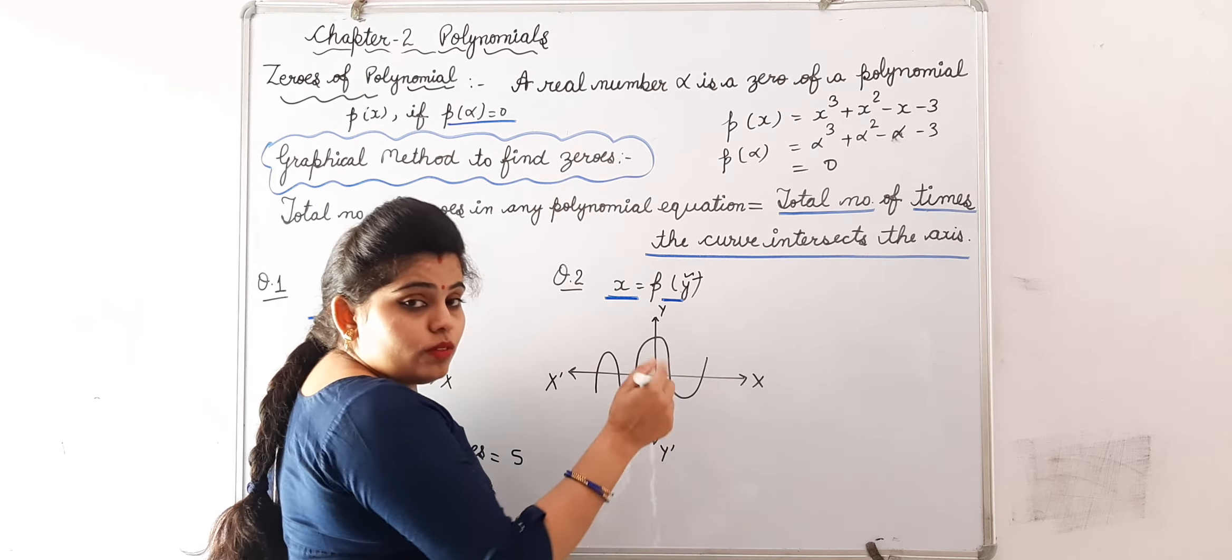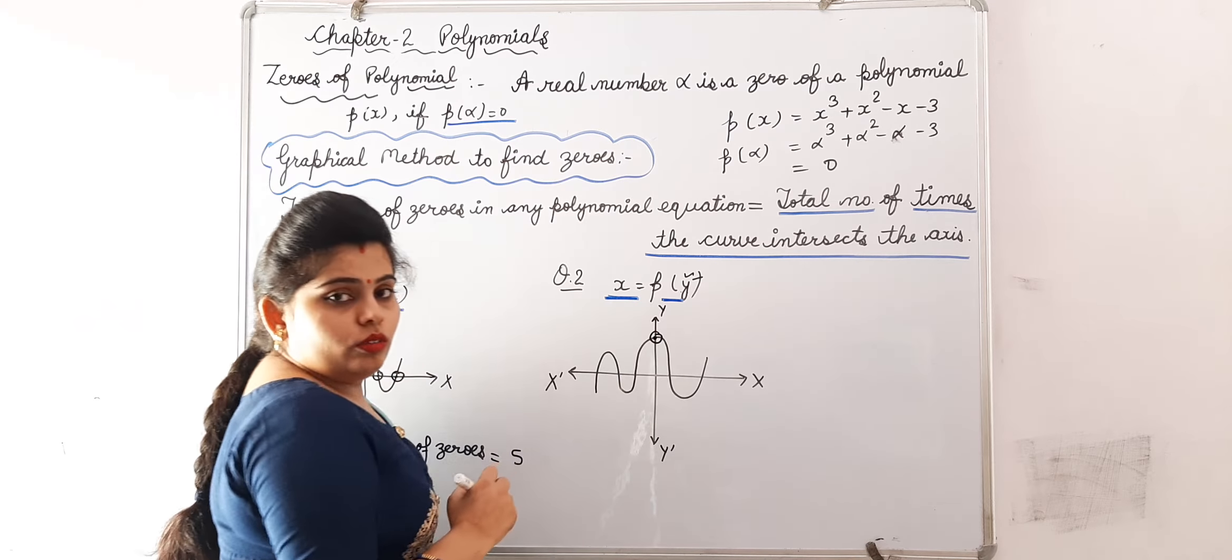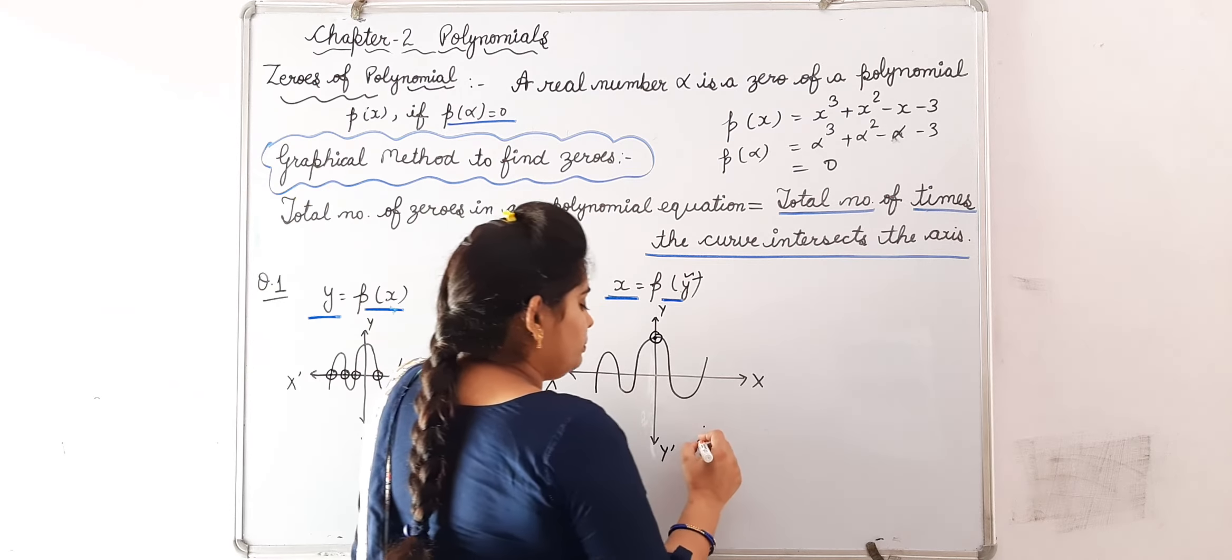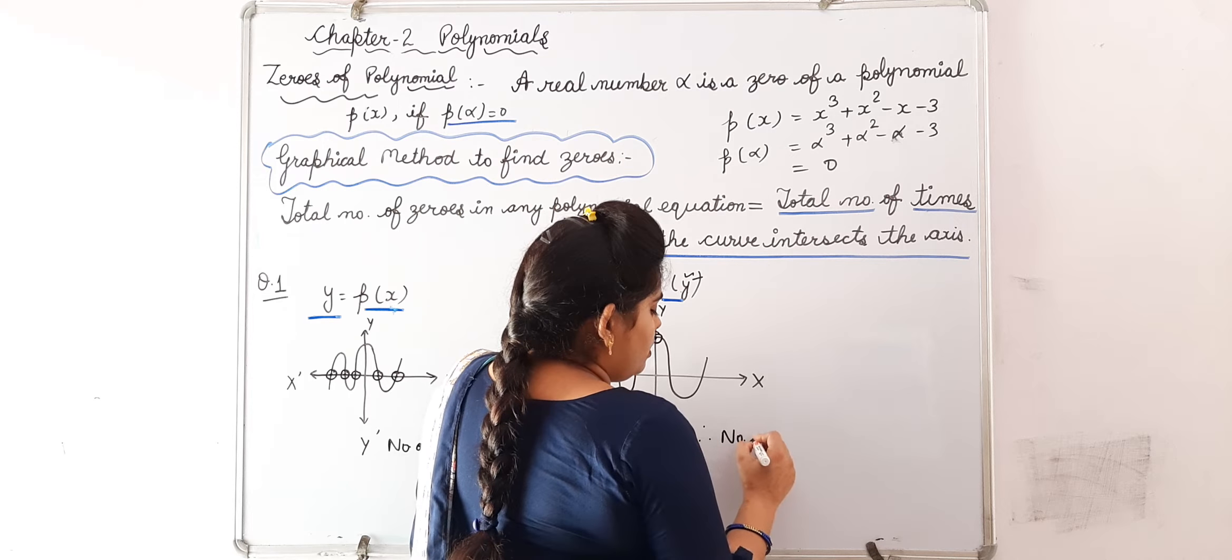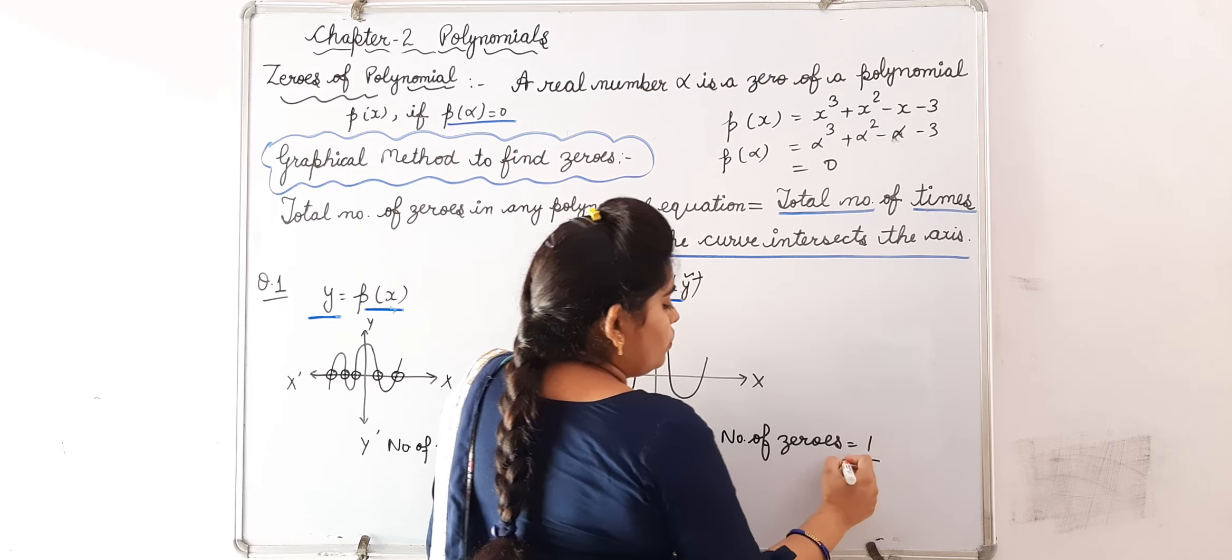Now we will check not on x axis, we will check on y axis. Now on y axis it cuts only at one time. So number of zeros is equal to 1.